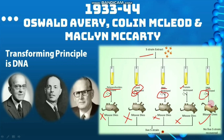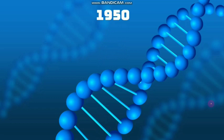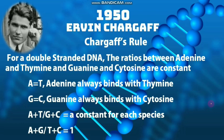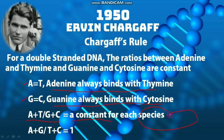In 1950, another discovery came, proposed by Erwin Chargaff, known as Chargaff's rule. He stated that for a double-stranded DNA, the ratios between adenine and thymine, and guanine and cytosine, are constant. Adenine is always equal to thymine because adenine binds with thymine, and guanine is always equal to cytosine because guanine always binds with cytosine. The ratio of adenine plus thymine to guanine plus cytosine is constant for each species, though it differs from species to species. This GC content is also considered a factor for classifying bacteria.